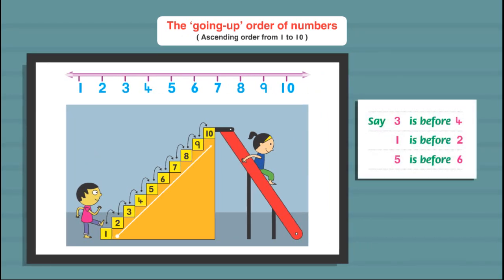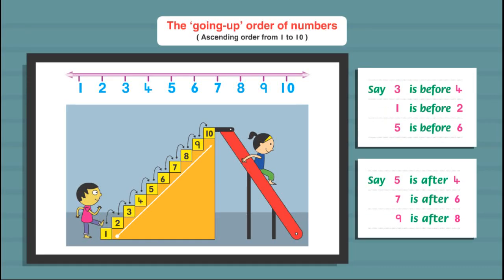Say: 3 is before 4. Say: 1 is before 2. 5 is before 6. Say: 5 is after 4. 7 is after 6. 9 is after 8.